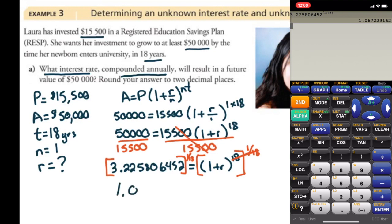And we get 1.067229162, which now equals 1 plus r.